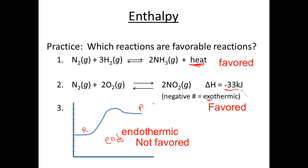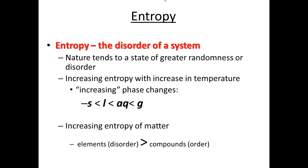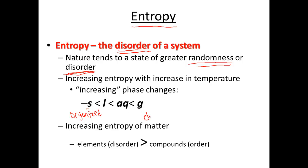Going with enthalpy, a very similar name with heat content, is going to be entropy. Entropy is the disorder of a system. Nature tends to go to a state of greater randomness or disorder — it's kind of like your bedroom at home, it tends to get messier and things want to get disorganized. With temperature increasing through phase changes: solids are most organized, then liquids, then things dissolved in aqueous solutions, then finally gases are most disordered.